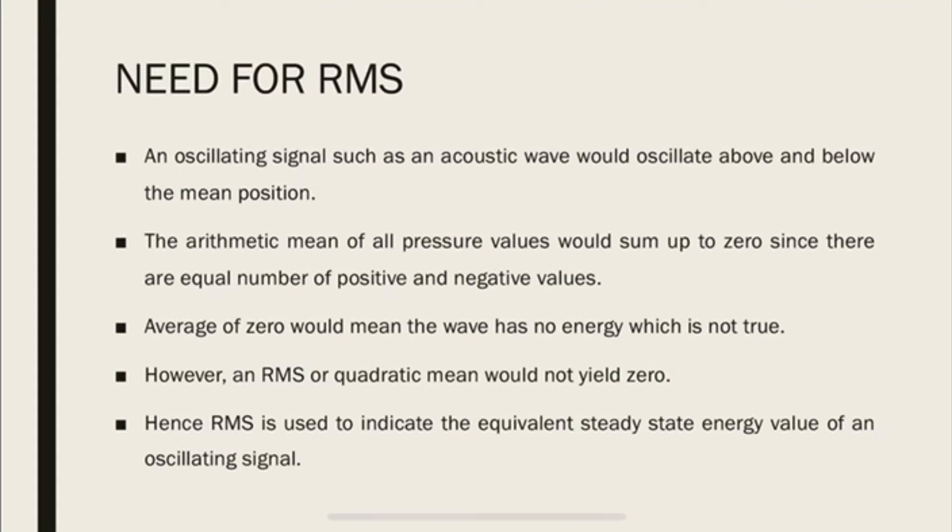And if you get zero, it would mean that the wave has no energy, which is not true. So we need a representation to convey that, to calculate the energy that the wave has. And that's where RMS comes in, because RMS, the quadratic mean, would not yield zero because we're squaring things up. So even if there is a negative value, you square it up, it becomes positive. So hence, RMS is used to indicate the equivalent steady state energy value of an oscillating signal.